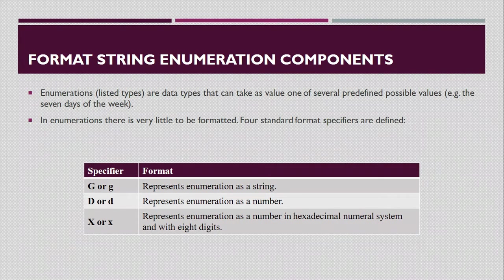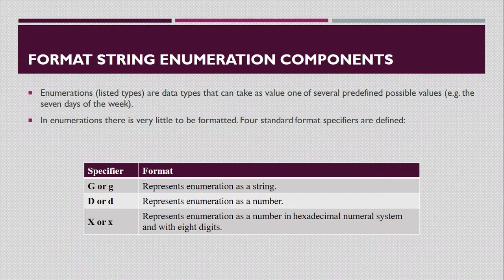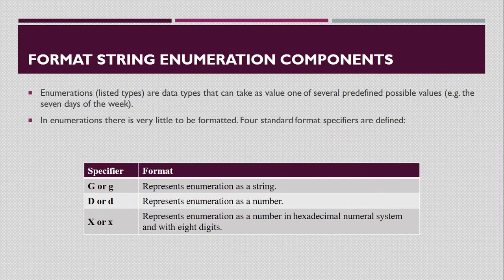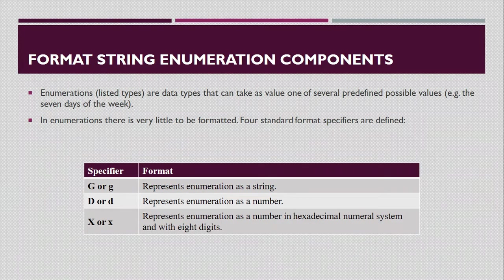Enumerations are data types that can take one of several predefined values — for example the days of the week, Monday through Sunday. For formatting enumerations, the format specifier G represents the enumeration as a string, so Monday is displayed as the text 'Monday'. D represents the enumeration as a number — Monday is displayed as a number because it is the first day of the week. X represents it as a hexadecimal number with eight digits.